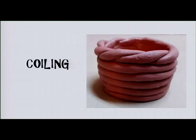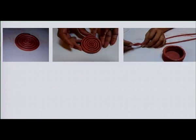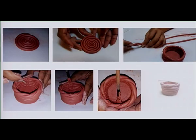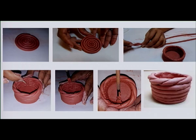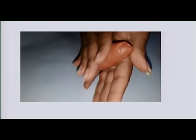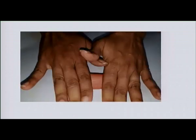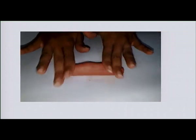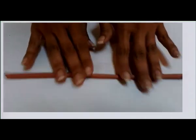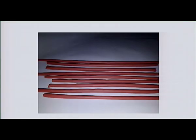Coiling. We are going to do a coil pot. The coiling method is simple — we have to make long snake-like coils with clay. Take some clay and roll it with your hands to make long coils. The clay should be soft and easy to work with. Roll the clay until you get even coils. Prepare several coils of about the same thickness and length.